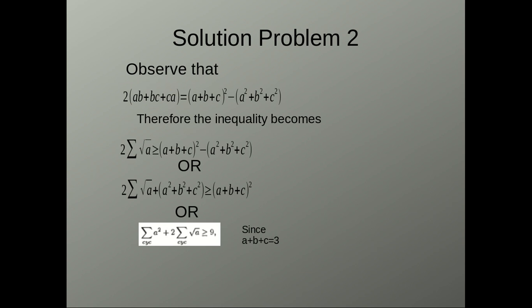AB plus BC plus CA into 2 is of course A plus B plus C whole square minus A square plus B square plus C square. Now, in the given inequality which we have to prove...